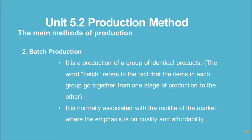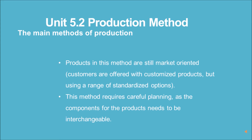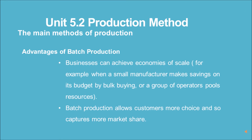Batch production is the production of a group of identical products. The word batch refers to the fact that the items in each group go together from one stage of production to the next. It is normally associated with the middle of the market where the emphasis is on quality and affordability. Products in this method are still market-oriented; customers are offered customized products but using a range of standardized options.